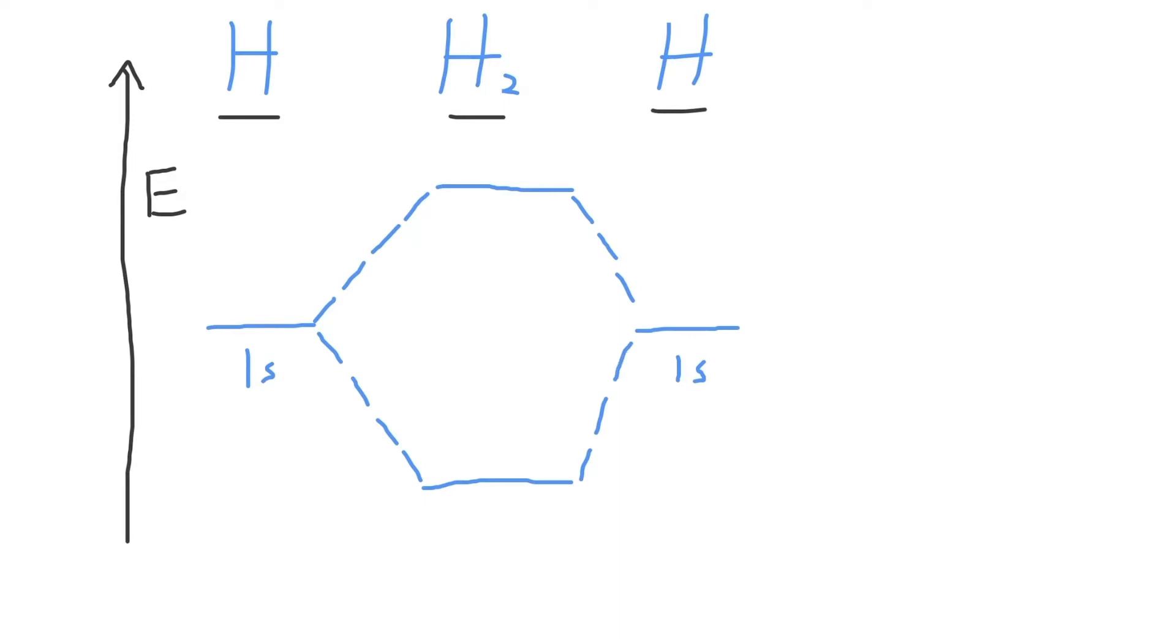Then we'll name them. The lower molecular orbital is called the sigma 1s bonding molecular orbital and the higher is a sigma 1s star antibonding molecular orbital.